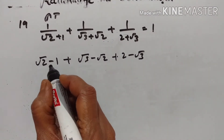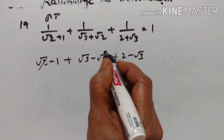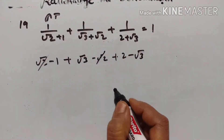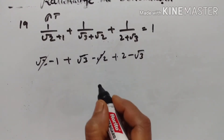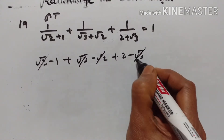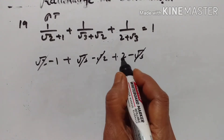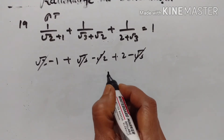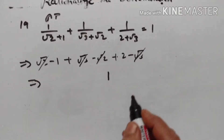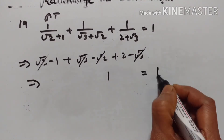Now adding all three terms: square root of 2 minus 1, plus square root of 3 minus square root of 2, plus 2 minus square root of 3. Plus square root of 2 minus square root of 2 cancels. Plus square root of 3 minus square root of 3 cancels. We are left with 2 minus 1, which equals 1. So 1 equals 1, and the sum is proved.